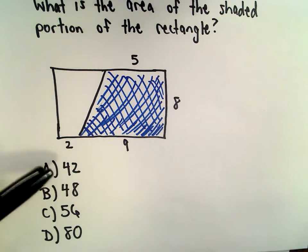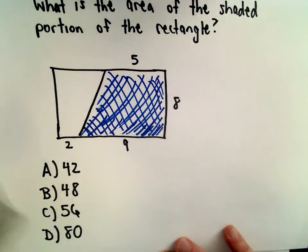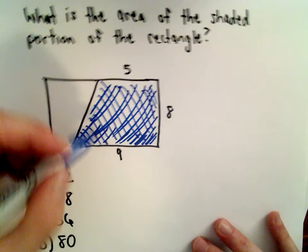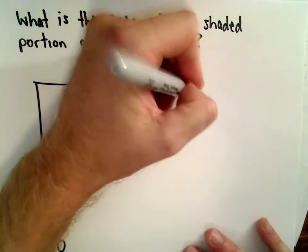We've got the choices 42 units, 48 units, 56 units, and 80 units, and the thing to recognize is that the blue shaded part is just a trapezoid.